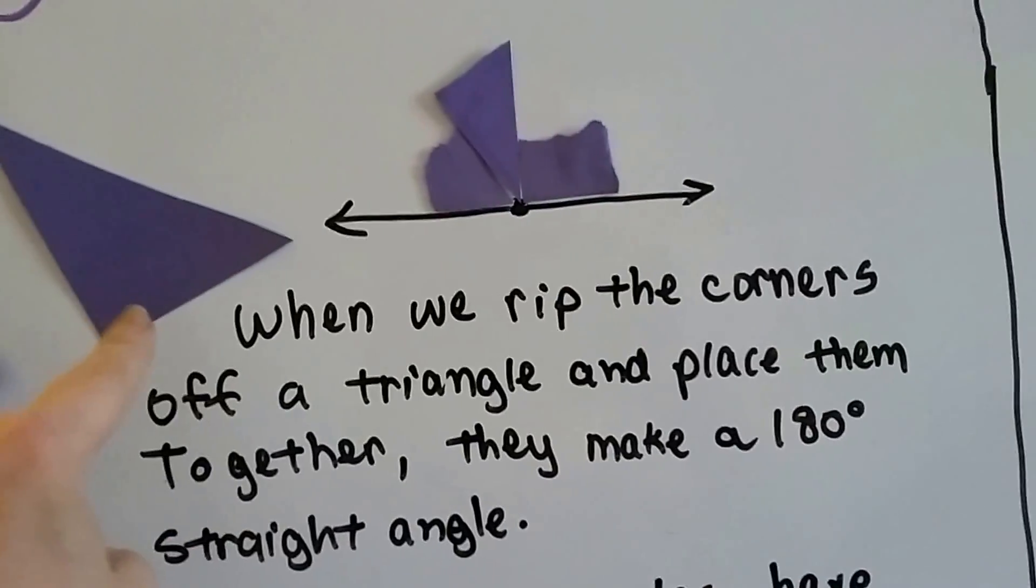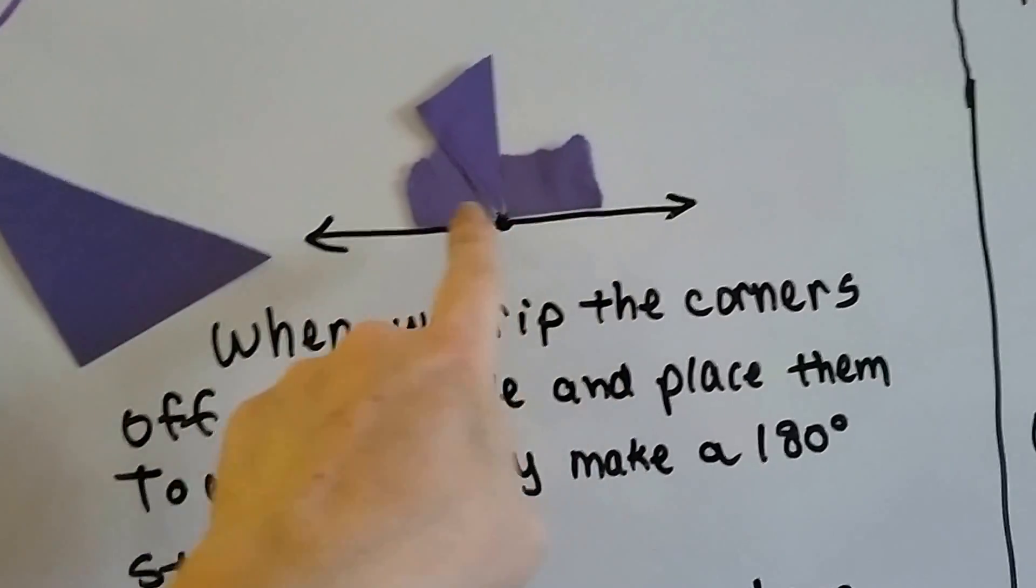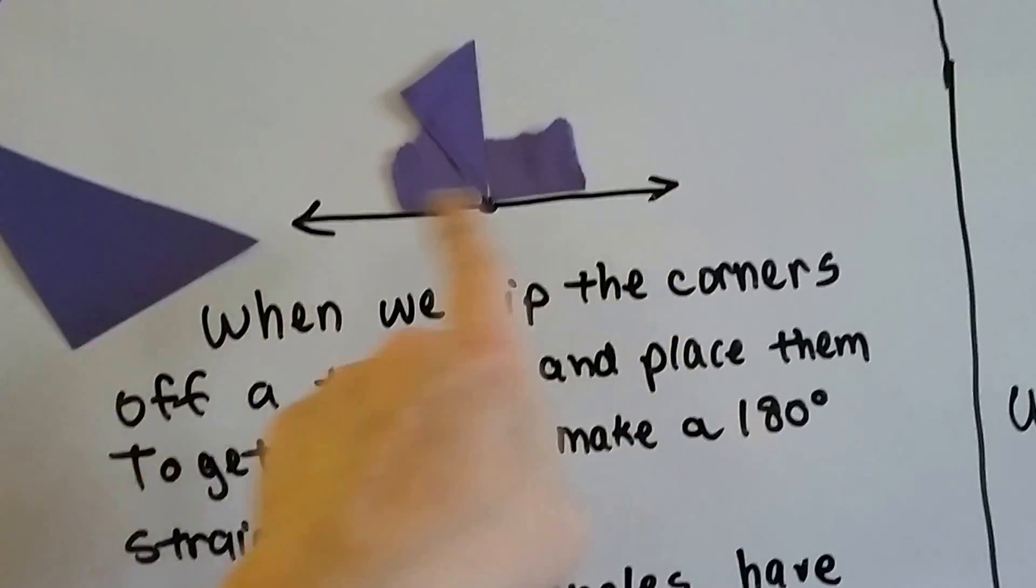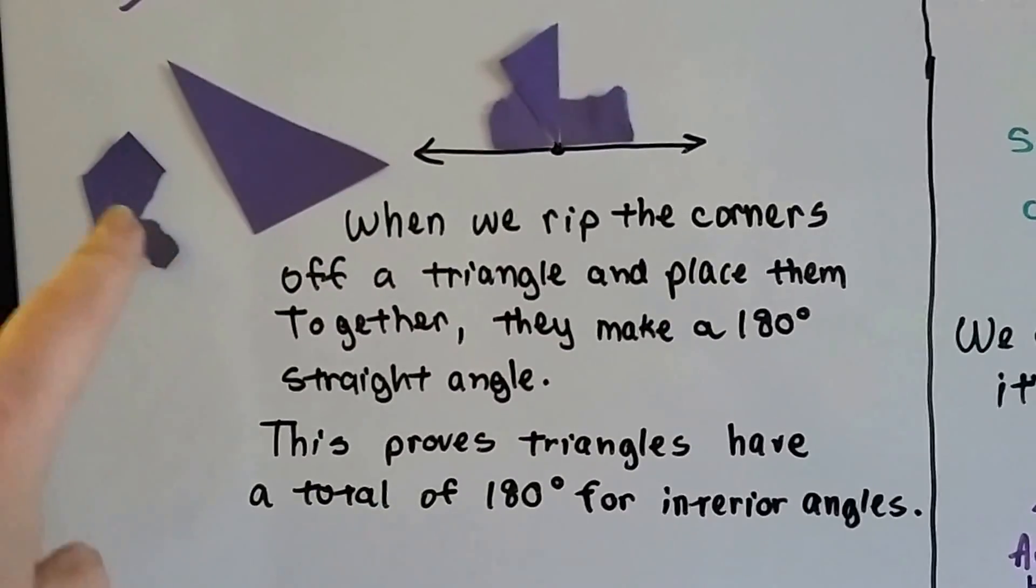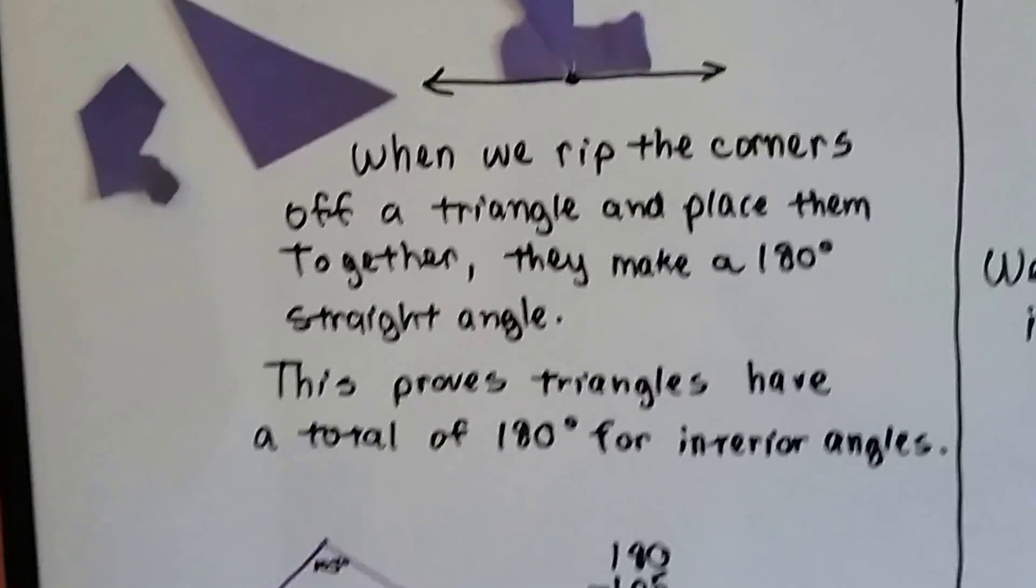Look at that. The three corners, one, two, three, when placed on a straight line, they make the 180 degree straight angle. So that proves triangles have a total of 180 degrees for interior angles. Because we took the corners off and made a straight line out of them.